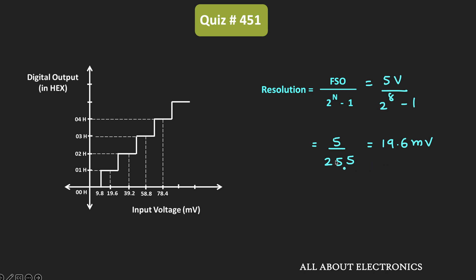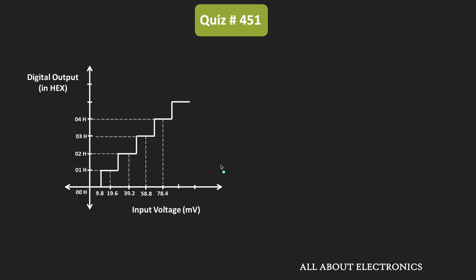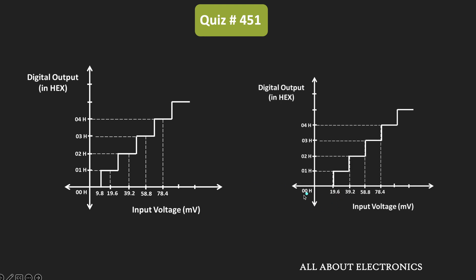This resolution is also known as the step size. Basically, the step size represents the size of each step — it shows that when the input voltage changes by this amount, how the output code will change. When the input voltage changes by one step size, the output code changes by one bit. That is why this step size is also represented as the LSB. So one LSB represents the change in input that causes the output code to change by one bit.